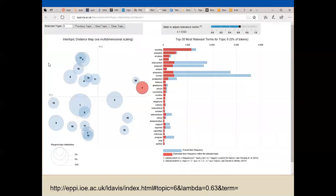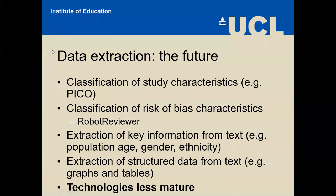In terms of data extraction in the future, those familiar with Cochrane work on PICO will know we're moving quite quickly to being able to classify some classes of studies in terms of their PICO — Population, Intervention, Comparators and Outcomes. Those who've used the Robot Reviewer tool know it's possible to estimate risk of bias characteristics from PDFs of randomized trials. The EXACT tool and others are looking at extracting key information from text — population, age, number of people in studies. Other work ongoing, though not yet deployed, is thinking about structured data from graphs and tables to help save the laborious and error-prone task of retyping numbers from tables in order to calculate effect size estimates. These technologies are much less mature, so we are thinking about the future here.